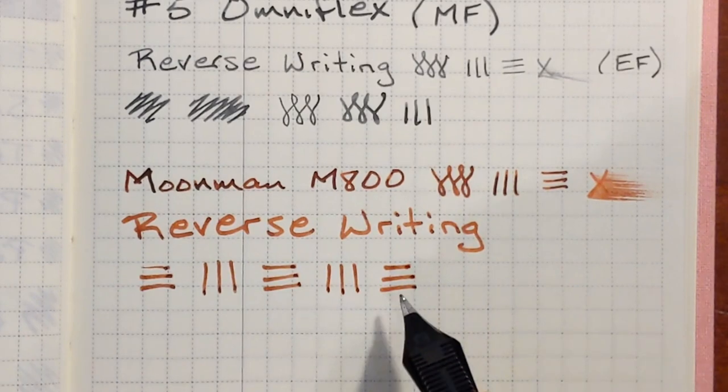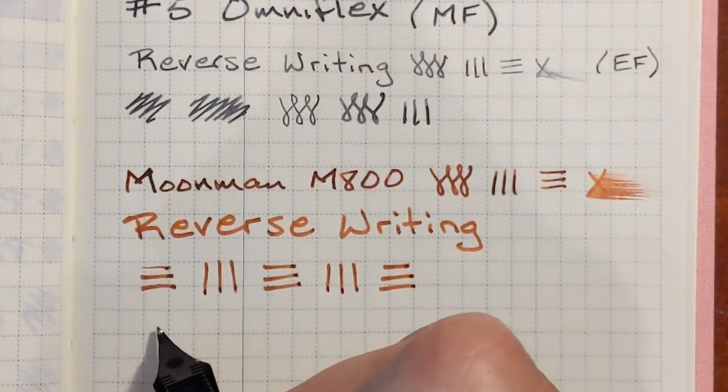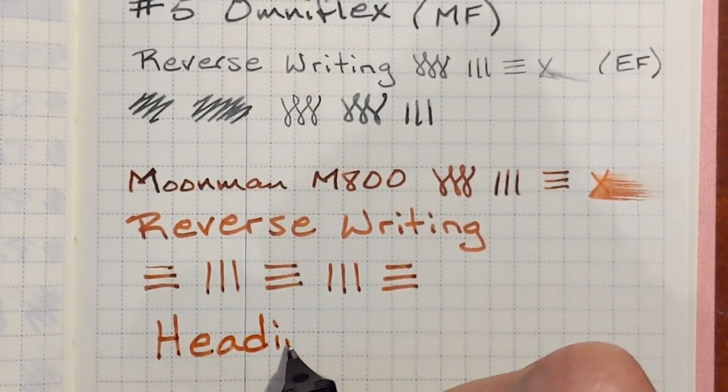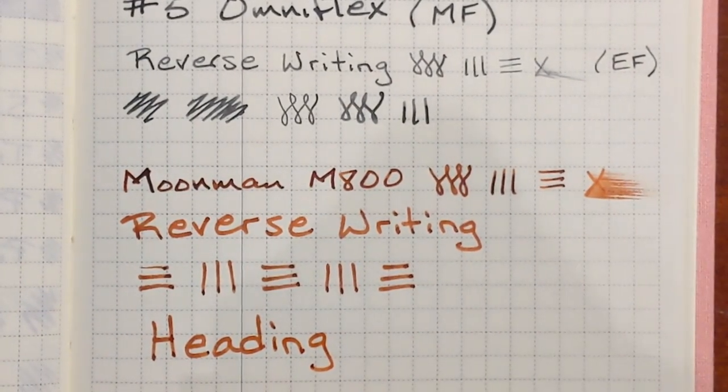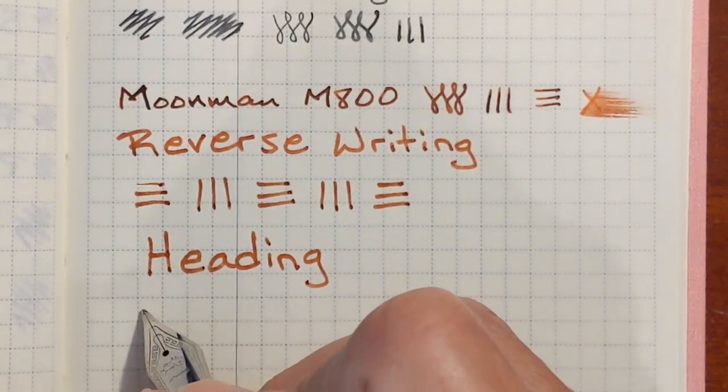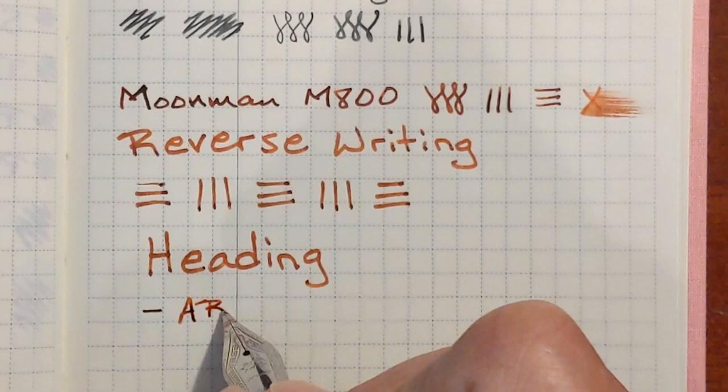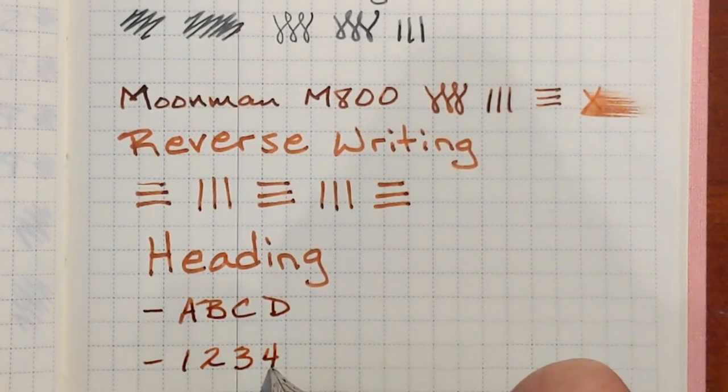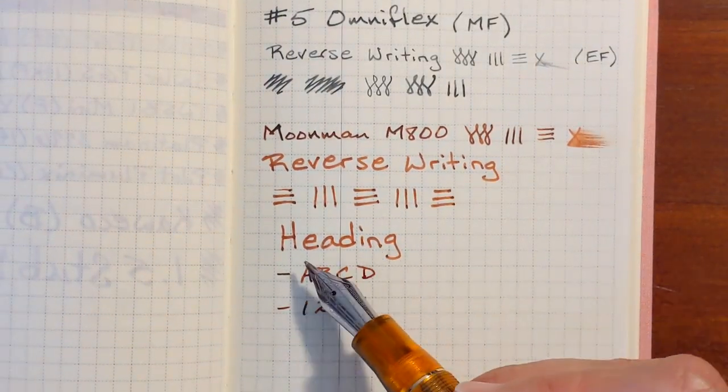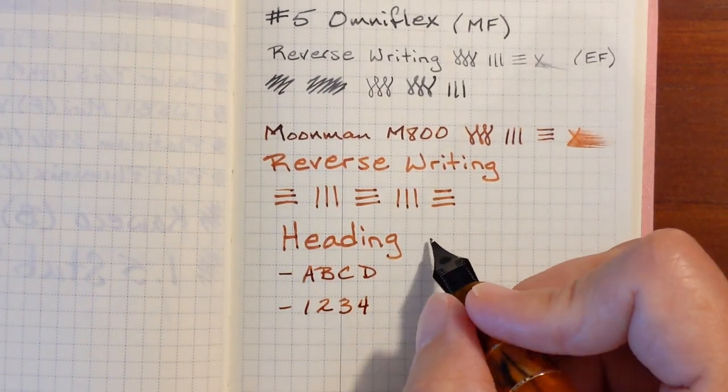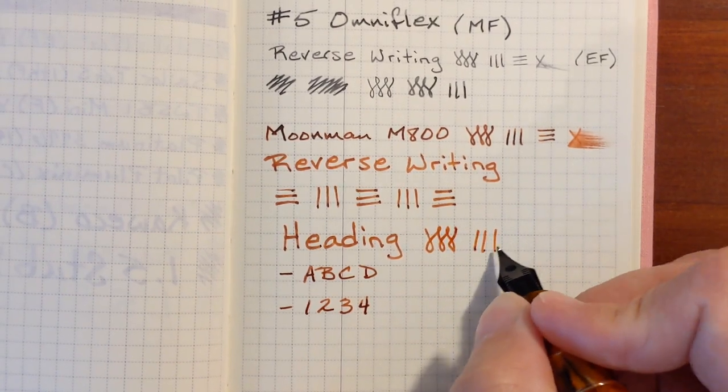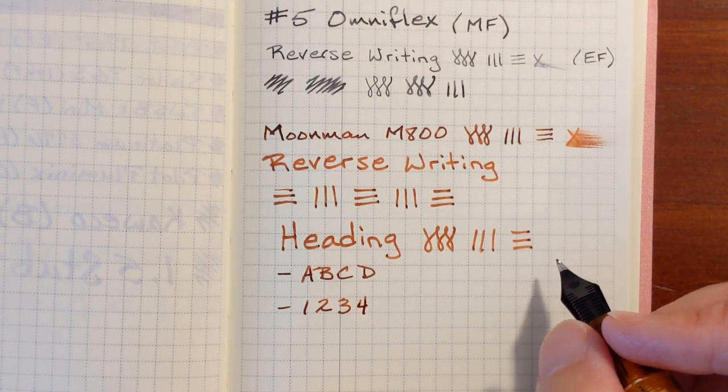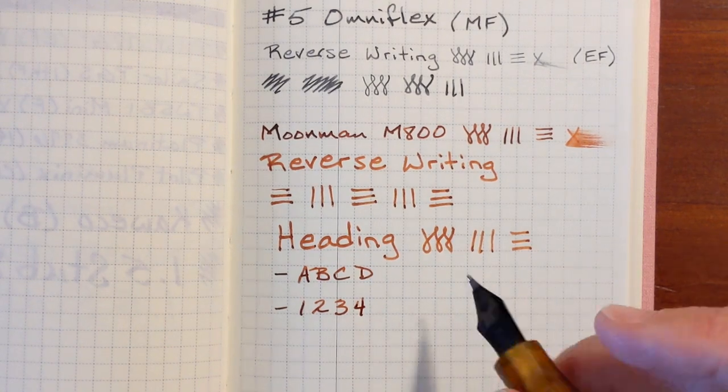The reason I want the back side of the nib to write a little broader is like if I want to write a heading in some notes, and then the majority of my notes will be a finer line. The only thing I don't like about it right now is how flat the ink is when I'm writing on the reverse side. And I think I can correct that by using a darker, more saturated ink, maybe a darker blue.